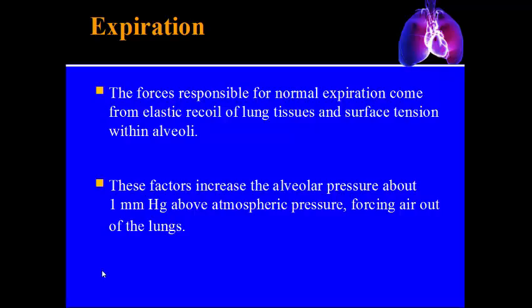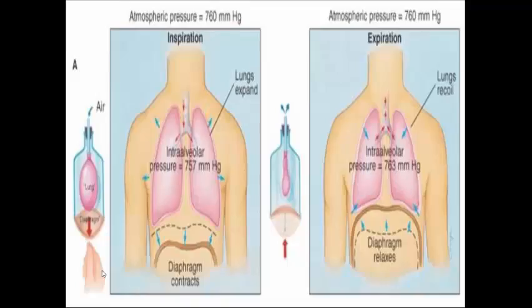For expiration or exhaling, the forces responsible are the elastic recoil of lung tissue and surface tension within the alveoli, which increase pressure within the alveoli to one to three millimeters of mercury above atmospheric pressure, forcing air out. Normal atmospheric pressure is 760 mmHg. During inhalation pressure drops to 757 mmHg; during exhalation it rises to 763 mmHg — that difference drives airflow in and out.